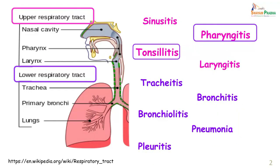We are going to be talking about respiratory tract infections and bacteremia. The respiratory tract is divided into the upper and lower respiratory tract, and the various diseases which can occur are sinusitis, tonsillitis, pharyngitis, laryngitis, tracheitis, bronchitis, bronchiolitis, pneumonia, and pleuritis.